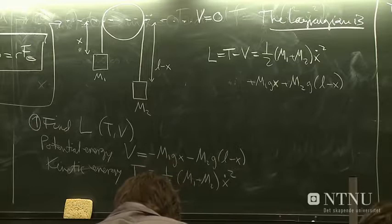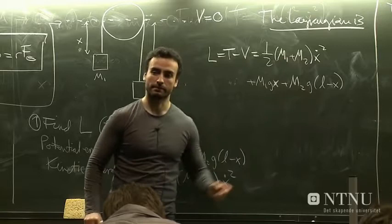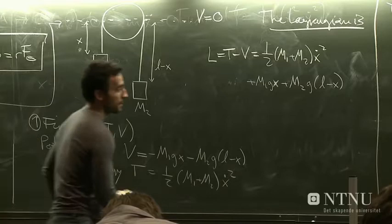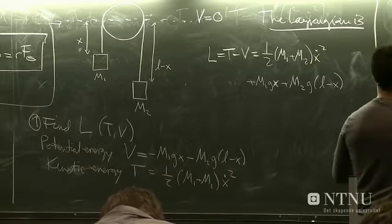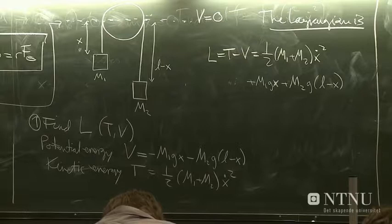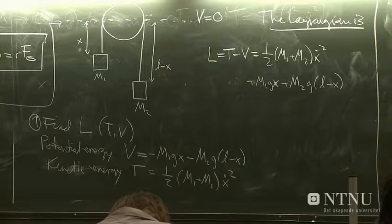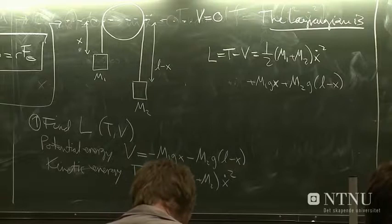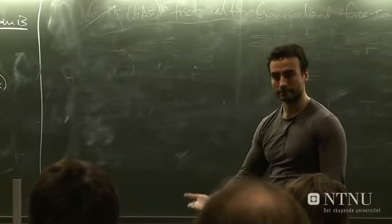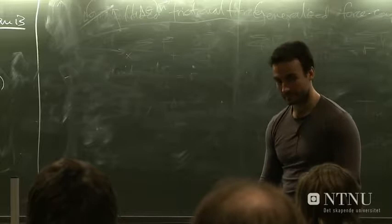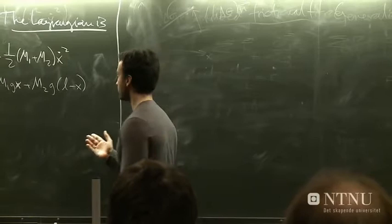So, and this is the complete Lagrangian of the system. The kinetic part minus the potential energy. Okay, what would you do next? You have the Lagrangian. And then? Start deriving with respect to x. Yes. You start deriving with respect to x and x dot.